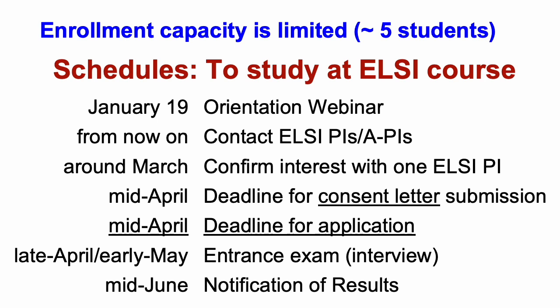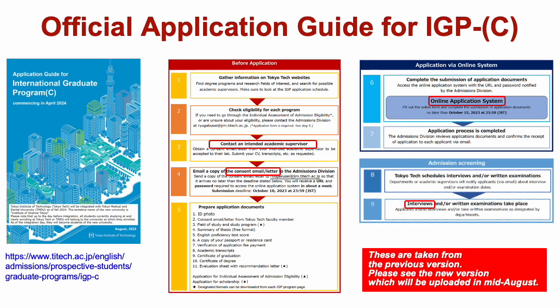After you submit everything, you will have an interview in late April or early May — this interview is the entrance exam. After that, you will receive the result in mid-June. The official application guide shows the schedule and detailed information. Submission will be done online. For the LC course, there is no written examination — only an interview.